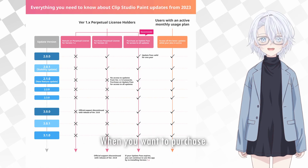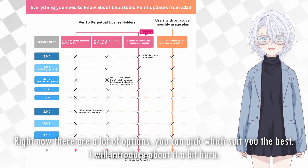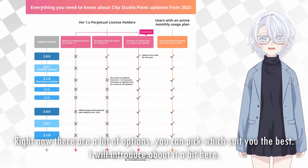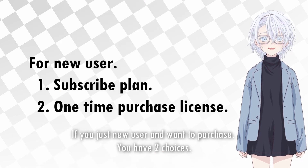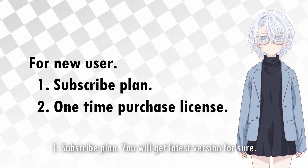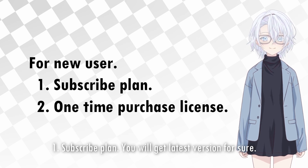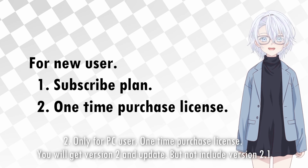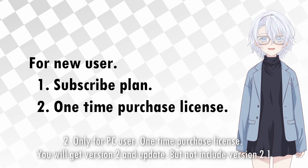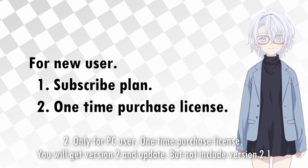When you want to purchase, right now there are a lot of options and you can pick which suits you best. If you are a new user and want to purchase, you have two choices: one, the subscribe plan — you will get the latest version for sure; two, only for PC users, a one-time purchase license — you will get version 2 and updates, but this does not include version 2.1.